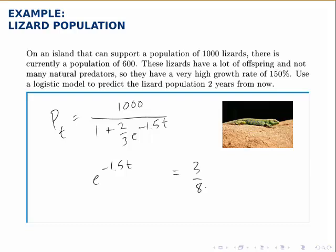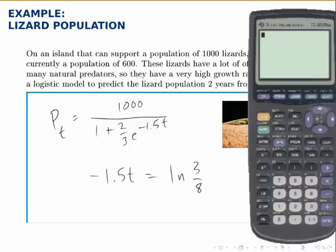Now, to solve for t, rewrite this as a logarithmic equation, and we find that the natural log of 3 eighths is negative 0.981. That divided by negative 1.5 is t. So t is about 0.654.